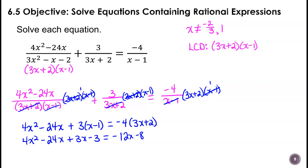Now I'll combine like terms and get everything on one side. There are no other x squared terms, so that stays as 4x squared. On the left side I have negative 21x, and adding 12x gives negative 9x. Then negative 3 plus 8 is plus 5. So we need to factor 4x squared minus 9x plus 5.